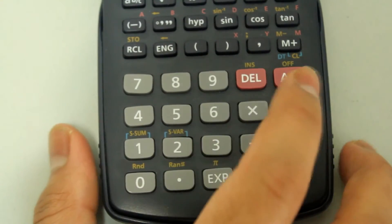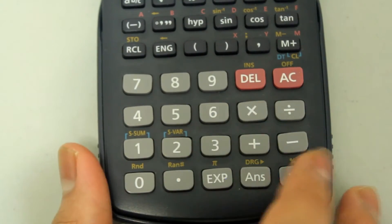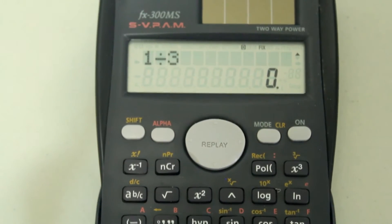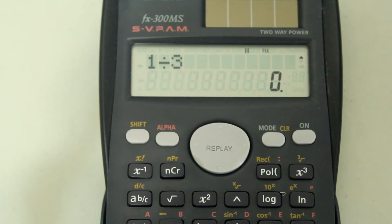Right now if you type in 1 divided by 3 and hit enter, you see that 0 is displayed as the answer. That's because the calculator is rounding to the nearest whole number right now. We know that 1 divided by 3 is 0.3 repeated, but the calculator is rounding to 0.